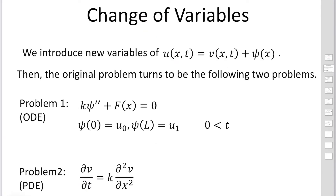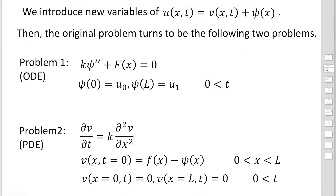To solve this equation, we change our variables by introducing a new variable, so that u is expressed as V plus Pc. Here, Pc is a function of x only. The original problem then turns into two separate problems. The first problem is an ordinary differential equation: k times Pc double-prime plus F(x) equals 0.